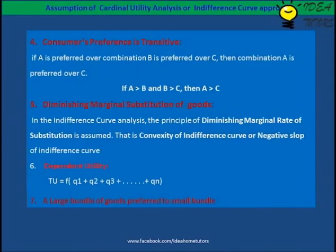The consumer's preference is transitive. If combination A is preferred over combination B, and B is preferred over C, then combination A is preferred over C. It can never be the case that C is preferred over A — if that happens, then the preference is not transitive.